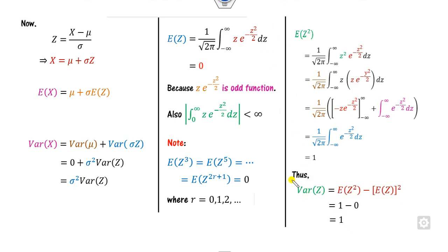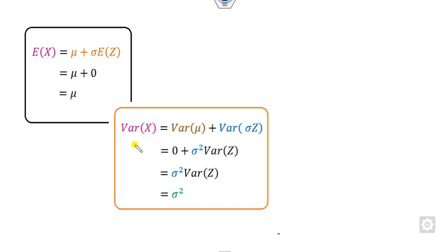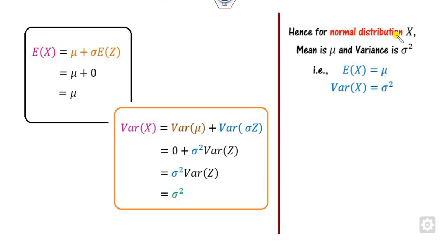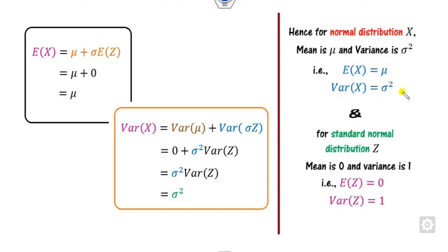Now substituting Var(z) = 1 and E[z] = 0 back into our expressions, we get the mean and variance of x. For the normal distribution, the mean is mu and the variance is sigma². For the standard normal variable z, the mean is 0 and the variance is 1, as we just derived.